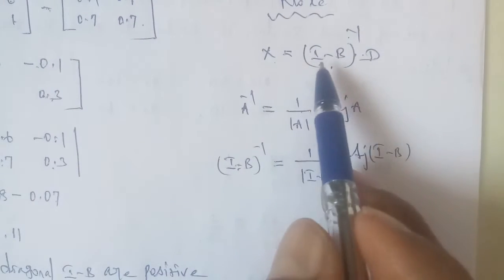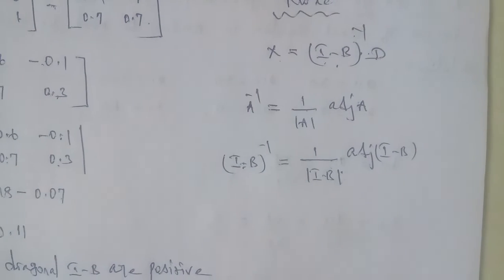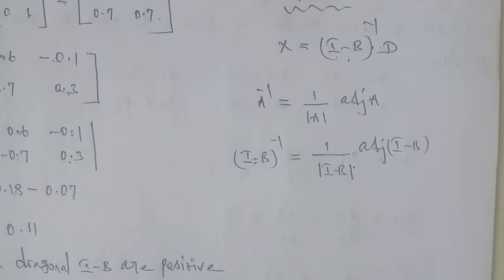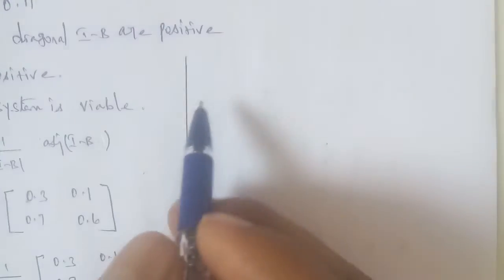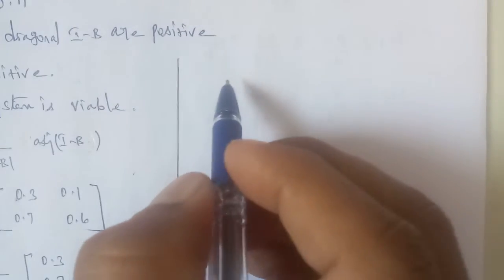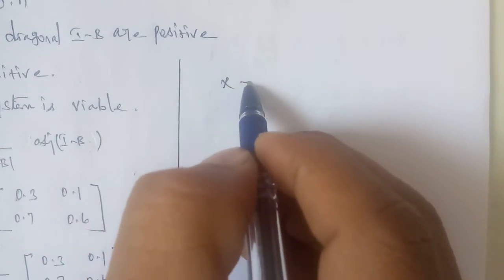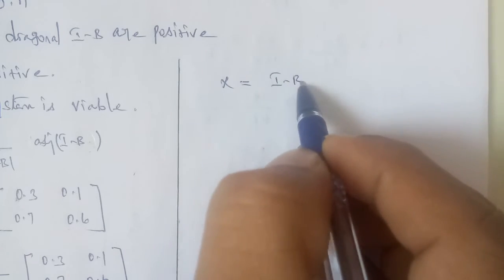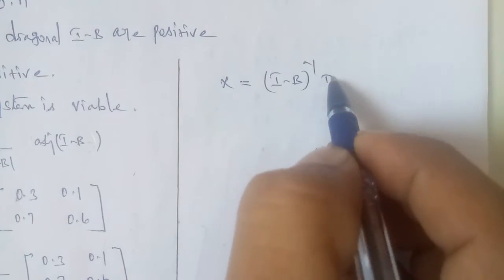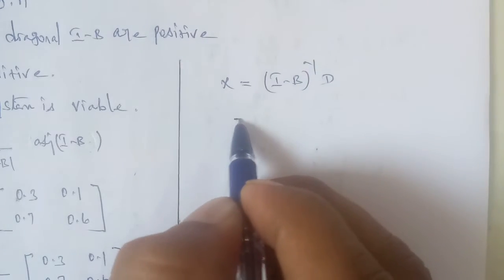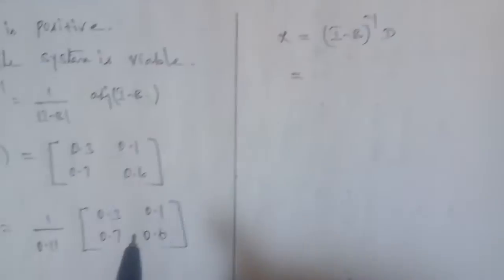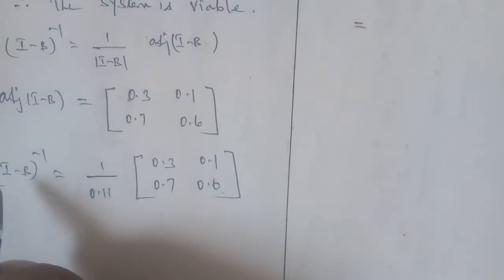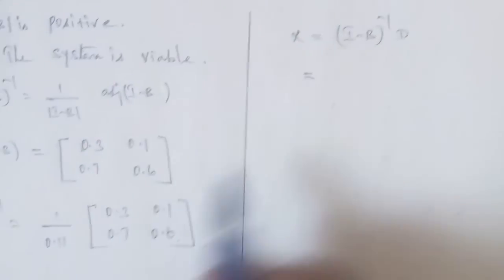Entering the main formula, the complete answer is substituted. The formula X = (I − B)^(−1) · D is applied. We substitute the I minus B inverse value.